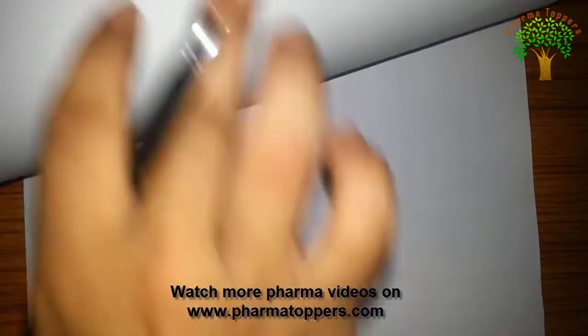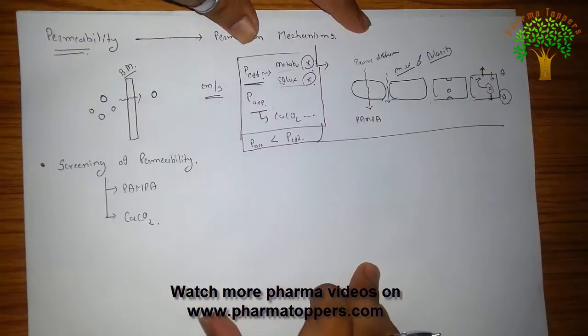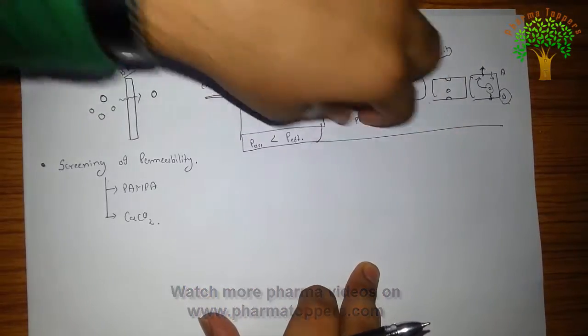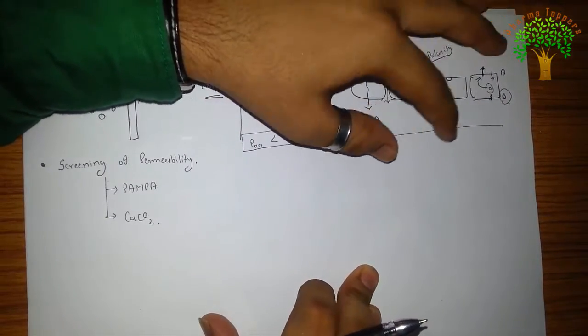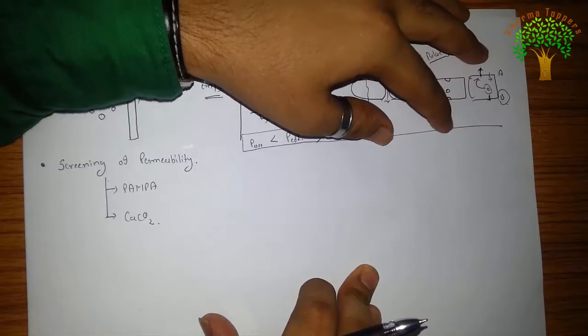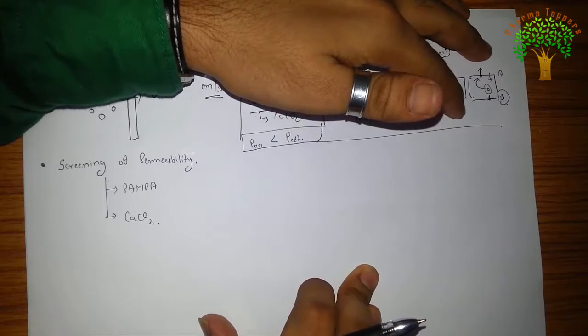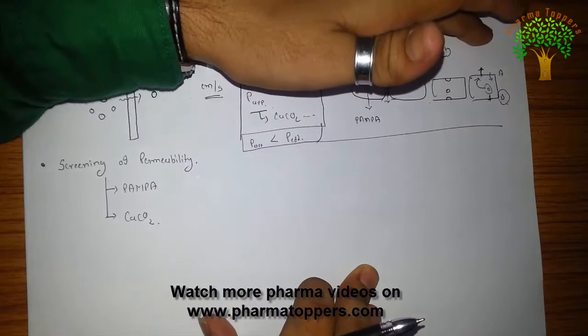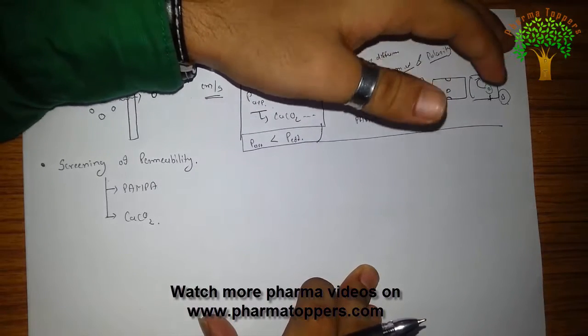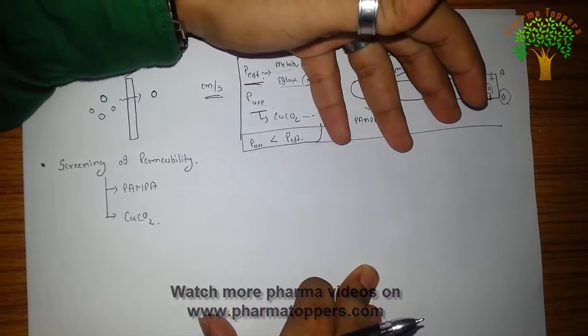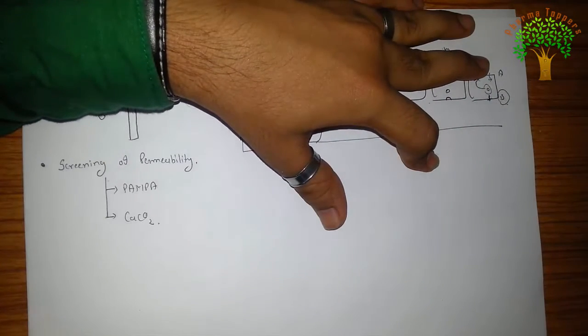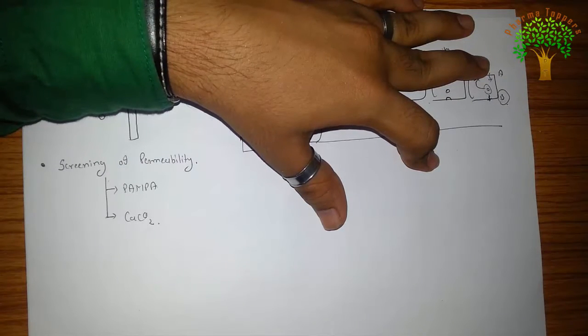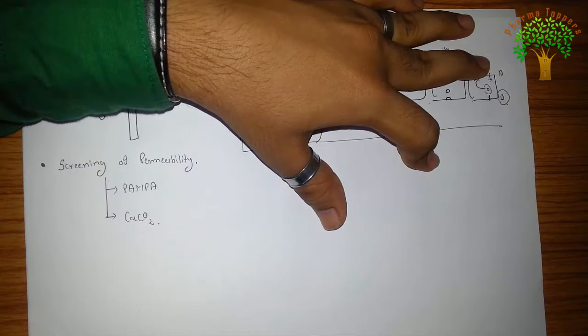Next is the permeability screening. This permeability screening is mainly done by means of PAMPA, CACO-2 in vitro. One can go for the in vivo techniques like intestinal perfusion studies in human or one can also go for in vivo perfusion studies in animals. But in vitro these two techniques are there, which are generally accepted by the US FDA and also mimic to some level the human intestine.